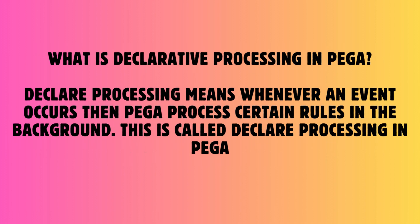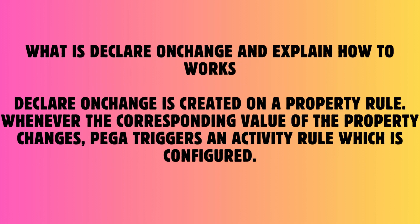Question: What is declarative processing in PEGA? Answer: Declarative processing means whenever an event occurs, PEGA processes certain rules in the background. This is called declarative processing in PEGA. Question: What is Declare On Change and explain how it works? Answer: Declare On Change is created on a property rule. Whenever the corresponding value of the property changes, PEGA triggers an activity rule which is configured.